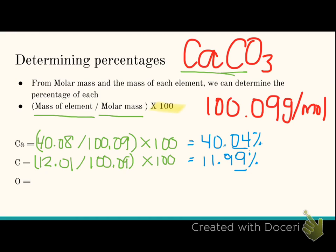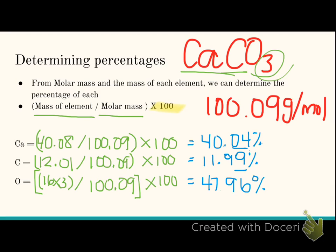And oxygen. Now I have three oxygens, so I can't just do 16 divided by 100.09. I need to do the total of what I have for oxygen. So I'm going to take my 16 times 3 first, and then I'm going to divide that by 100.09, then we multiply by 100. Go ahead and type that in, see what you get. 47.96%.